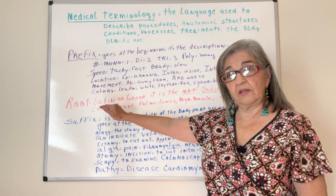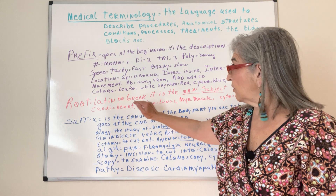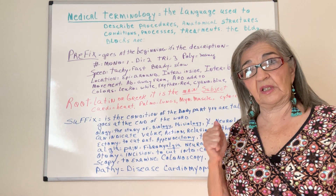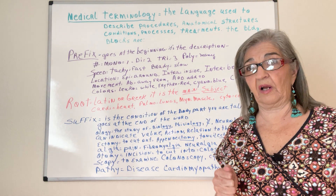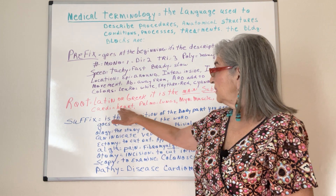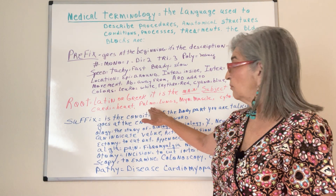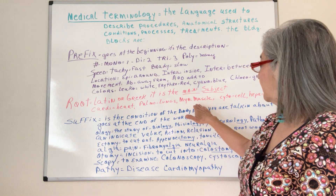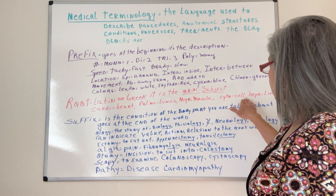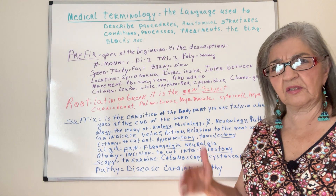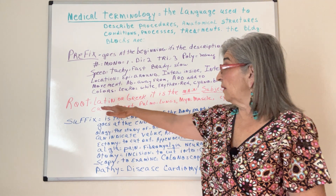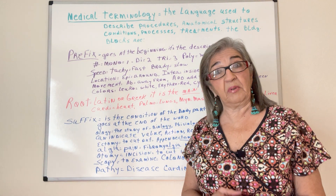The root word usually comes from a Latin or Greek word, and it is the main subject that you're talking about. Are you talking about the heart? 'Cardi' means heart, 'pulmon' means lungs, 'myo' means muscle, 'cyto' means cell, and 'hepa' means liver — and so on. So the root word is the meat and potatoes.